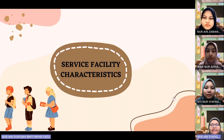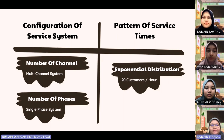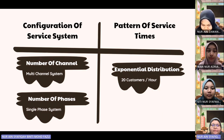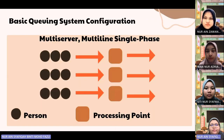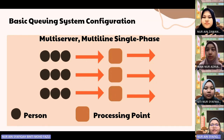Next is service facility characteristics. The configuration of the service system in Akon Jaya Machang is a multi-channel system, while the number of phases is a single-phase system. For the pattern of service time, the exponential distribution in Akon Jaya Machang is about 20 customers per hour. So the basic queuing system configuration in Akon Jaya Machang is multi-server, multi-line, single phase.